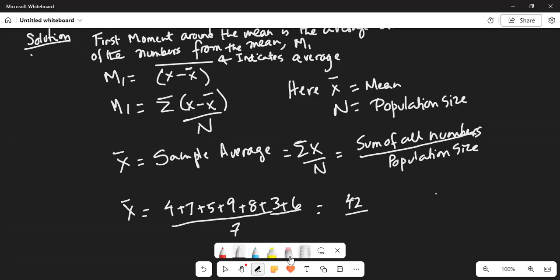So let me erase this and do this correctly. So, let's go. 4 plus 7 plus 5 plus 9 plus 8 plus 3 plus 6.